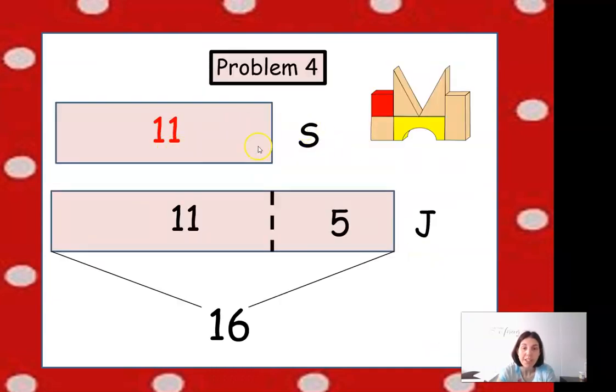So this shows the tape diagram where Shanika used 11 blocks, and Julio used 5 more, so he used 11 and then he used 5 more. So that's why you add this 5 here. He used the same number as Shanika, 11, and then he added 5 more blocks.